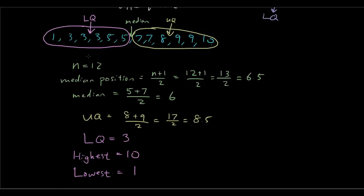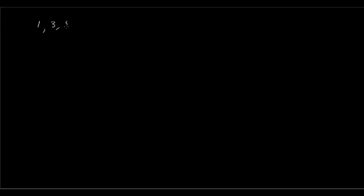So as you can see, we had an even number of scores in our data set — twelve. So what if we had an odd number of scores? I'm going to make it n equals eleven. So let's say we now have one, three, five, five, five, seven, eight, nine, nine, ten, thirteen.